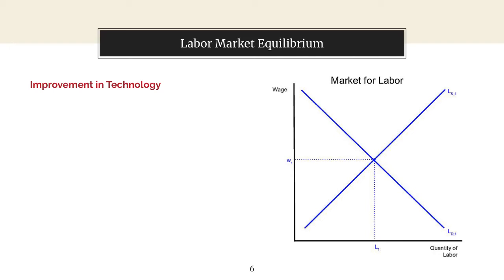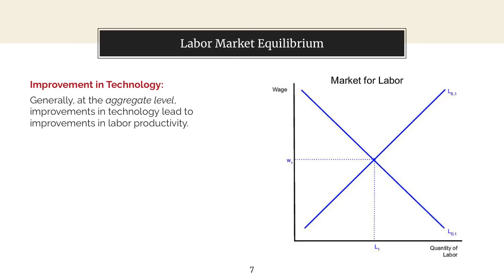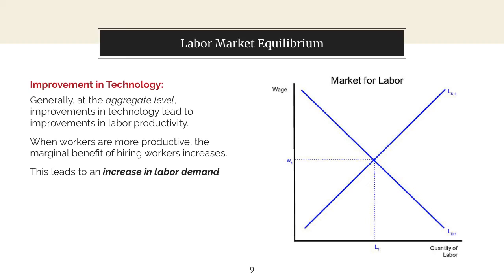Now what happens when there's an improvement in technology? Generally speaking, at the aggregate level, improvements in technology lead to improvements in labor productivity. When workers are more productive, the marginal benefit of hiring workers increases. This leads to an increase in labor demand. Labor demand therefore shifts to the right, as shown here from the blue labor curve to the red labor curve.